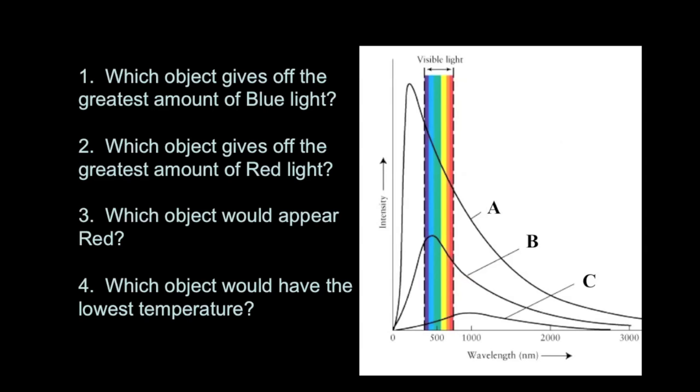So here we've got three different spectral curves, A, B, and C, and we can ask a few questions about them, and this will help prepare you for the lecture tutorial called Black Body Radiation. The first question we can ask ourselves is which object gives off the greatest amount of blue light? To figure this out, we go to the blue part of the spectrum, and then we look at which curve is most intense at that color. Well, C has the least amount of intensity, and A has the most, and so A is definitely giving off the greatest amount of blue light.